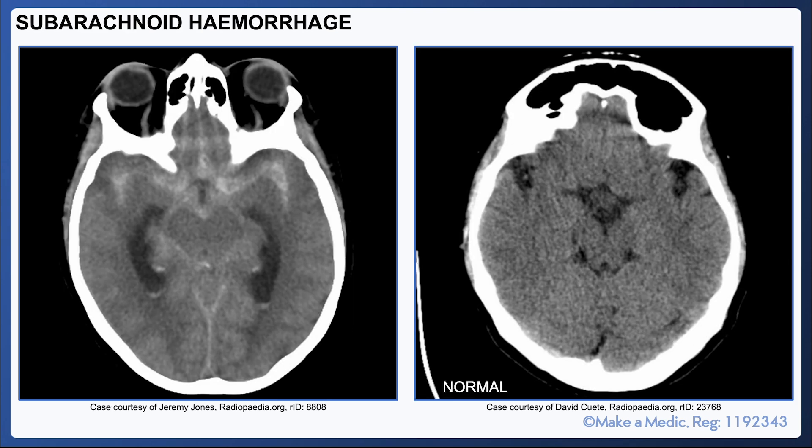If a CT head scan is performed within six hours of the onset of a thunderclap headache in a patient with a subarachnoid hemorrhage, it is highly sensitive. It's characterized by hyperdense material in the subarachnoid space and is usually most apparent around the circle of Willis. Here you can see the hyperdense fresh blood in the subarachnoid space compared to the normal unenhanced CT scan on the right.